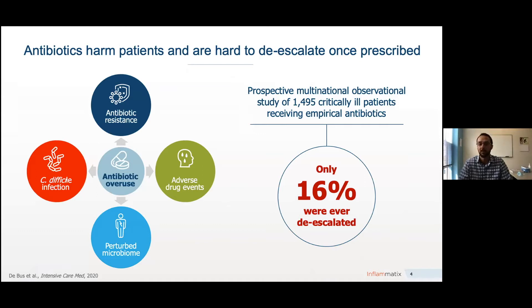That said, antibiotics can harm patients and are hard to de-escalate once prescribed. We know that antibiotic overuse can contribute to population antimicrobial resistance. JAMA Internal Medicine noted that about one in five patients treated with IV antibiotics experiences a directly attributable adverse drug event — these drugs are not free. Furthermore, a recent prospective multinational observational study of almost 1,500 ICU patients receiving empiric antibiotics found that only 16% were ever de-escalated, despite most having no evidence of a pathogen found in microbiology. Thus, the plan to eventually de-escalate just often doesn't pan out in clinical practice.